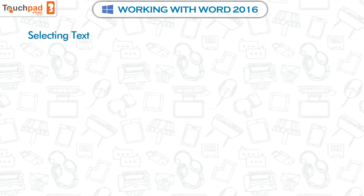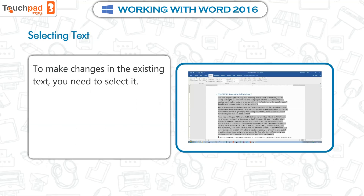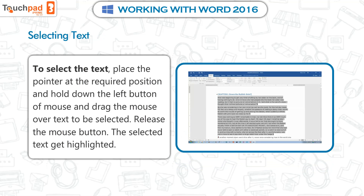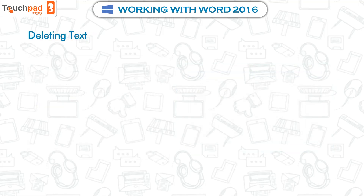Selecting text: to make changes in the existing text, you need to select it. To select the text, place the pointer at the required position, hold down the left mouse button, and drag the mouse over the text to be selected. Release the mouse button — the selected text gets highlighted.